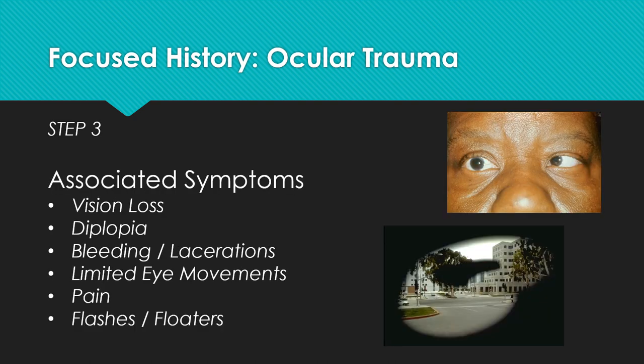From there, after determining the mechanism and timing of the patient's eye injury, one last step in the focused history includes any associated symptoms the patient might be experiencing. Some examples include sudden vision loss or blurring of vision following a traumatic event, double vision, any bleeding or lacerations related to the trauma, any limitation in eye movements in any direction that started after the trauma, eye pain and its severity, and whether they have started seeing flashes or floaters since the traumatic event.